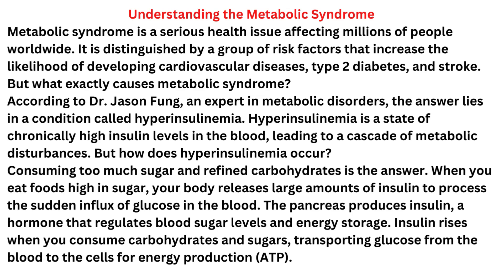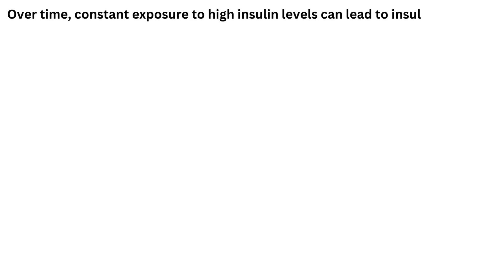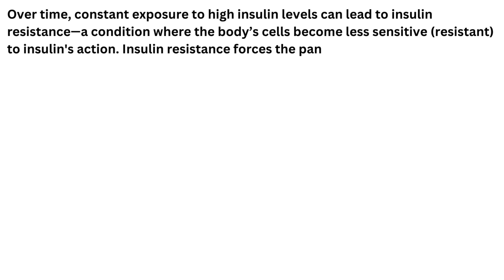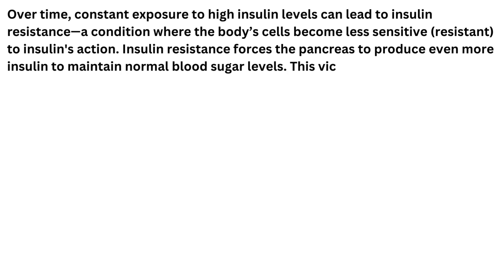But how does hyperinsulinemia occur? Consuming too much sugar and refined carbohydrates is the answer. When you eat foods high in sugar, your body releases large amounts of insulin to process the sudden influx of glucose in the blood. The pancreas produces insulin, a hormone that regulates blood sugar levels and energy storage. Insulin rises when you consume carbohydrates and sugars, transporting glucose from the blood to the cells for energy production (ATP). Over time, constant exposure to high insulin levels can lead to insulin resistance, a condition where the body's cells become less sensitive — resistant — to insulin's action.